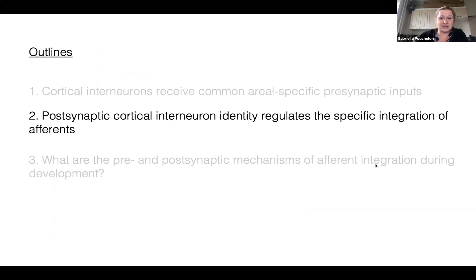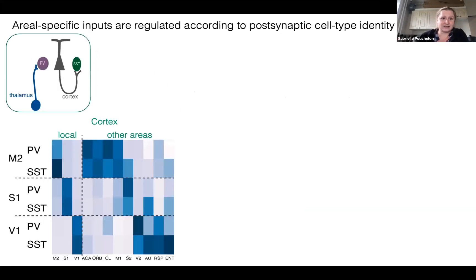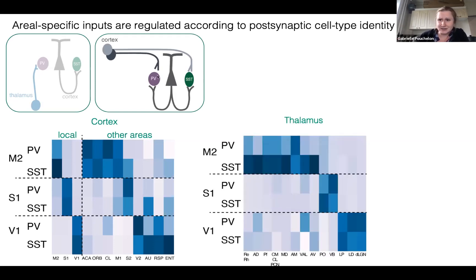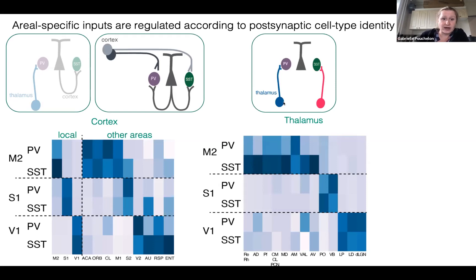Regarding how cell types specifically target afferents within those areas: if we look at local cortex specifically targeting SST — the canonical circuit — this is really the case in M2, but not in S1 and V1. PV and SST are not strongly segregated in terms of the afferents they receive; rather, they regulate the type of cortical input they receive depending on where it comes from. Similarly for the thalamus, we don't have a strong bias of thalamus to PV. Instead they receive distinct thalamic inputs within one area that they regulate differentially.